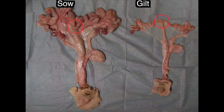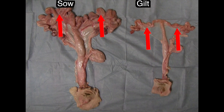Beyond the end of the cervix is the uterine body. The uterine body is quite small in the pig and is where semen is deposited during PCAI. The majority of the pig's uterus is comprised of uterine horns. The uterus houses the fetuses during gestation. At the far end of the uterine horns are the oviduct, where fertilization occurs, and the ovaries, which house the female's eggs.